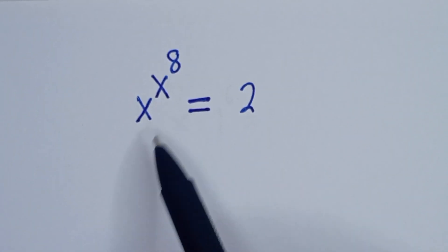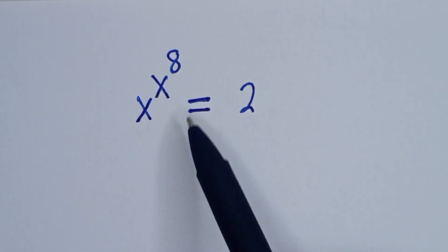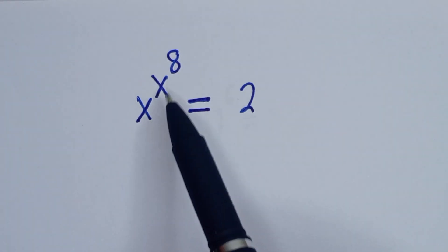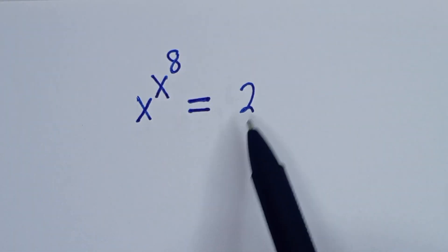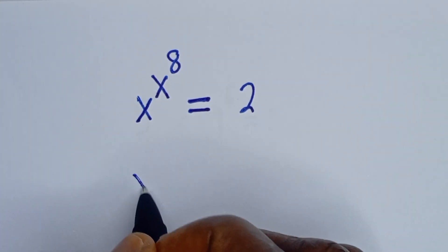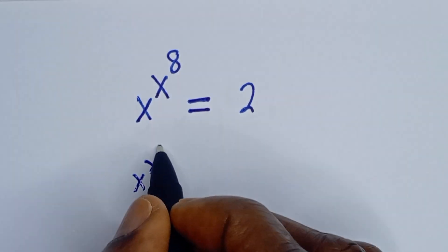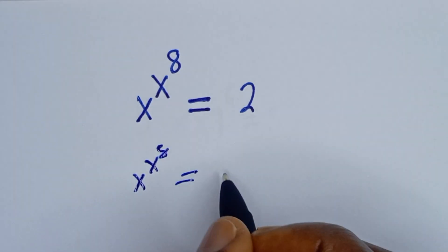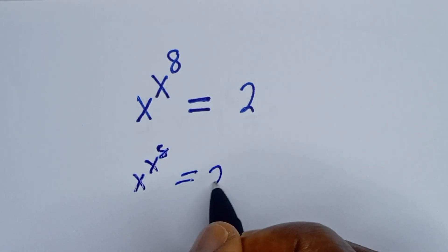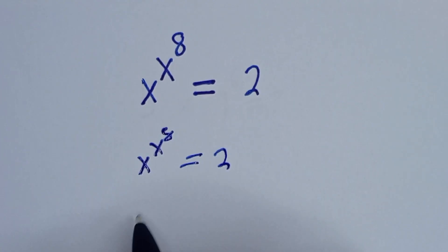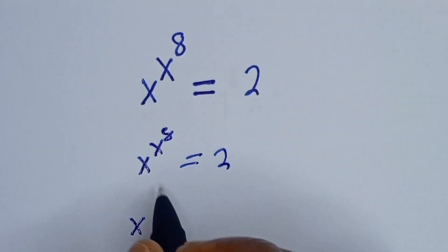Hello. How to solve for s from this given Math Olympiad exponential equation: s to the power of s to the power of 8 is equal to 2. Here we have s to the power of s to the power of 8 is equal to 2. Let's multiply the exponent of both sides by 8.